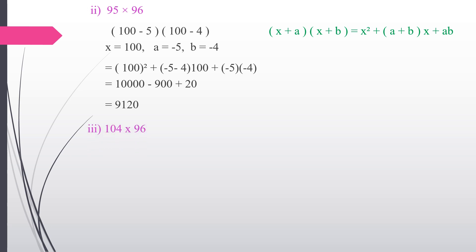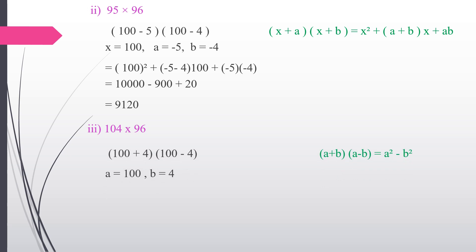Third subdivision: 104 × 96. We split this as (100 + 4)(100 − 4) and use the identity (a + b)(a − b) = a² − b², where a = 100, b = 4. Applying: 100² − 4² = 10,000 − 16. The answer is 9,984.